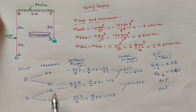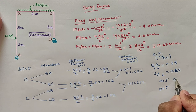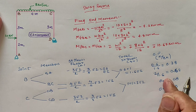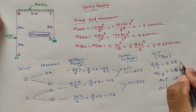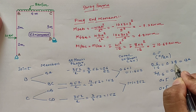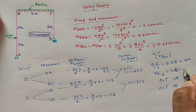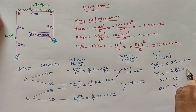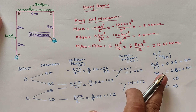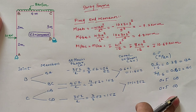So, for CB span and CD span our distribution factor value is 0.5, while for BA span our value is 0.38, and for BC span our value is 0.62.